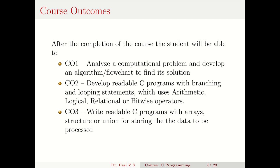As per the course outcomes, the first course outcome CO1 is that after completion of the course the student will be able to analyze a computational problem and develop an algorithm or flowchart to find a solution. The student will be able to look at a problem, split it into smaller problems, and then develop an algorithm or flowchart to find the solution.